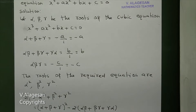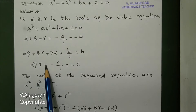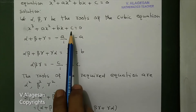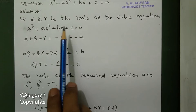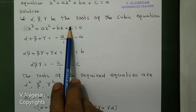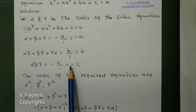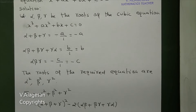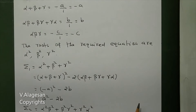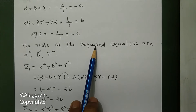Next, product of three roots: alpha·beta·gamma = minus c by 1, which is minus the constant term divided by the coefficient of x³, so alpha·beta·gamma = -c.